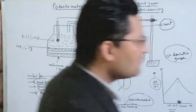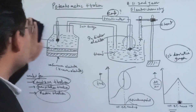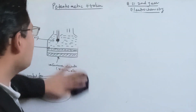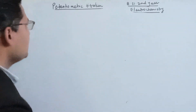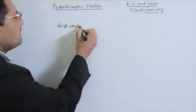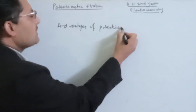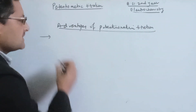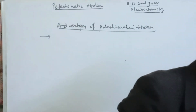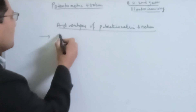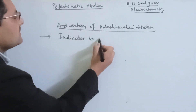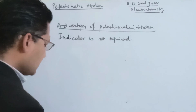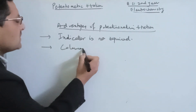What is the advantage of potentiometric titration? The advantage of potentiometric titration is that a visual indicator is not required. This indicator is not required, which is a key benefit.